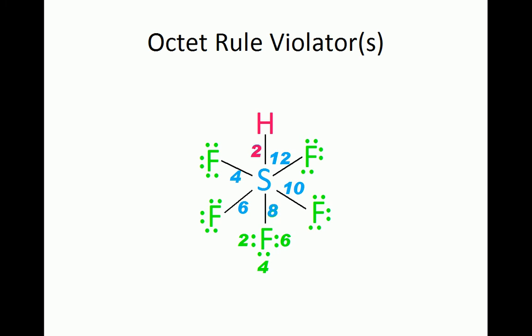we count the electrons around Sulfur and see that Sulfur is surrounded by 12 electrons. Sulfur is in the third row of the periodic table, meaning it can have an expanded octet. Based on the fact that Sulfur has 12 surrounding electrons and Hydrogen has two surrounding electrons, we see that both Hydrogen and Sulfur violate the octet rule.